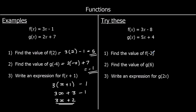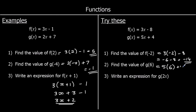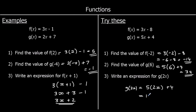For the first one, we're changing x in the f function to negative 2. So 3 times negative 2 minus 8, which is negative 6 minus 8, which is negative 14. For the second one, we're changing x to 6 in the g function. So 5 times 6 plus 4, which is 34. And write an expression for g(2x): we're changing x into 2x in the g function. So that is 5 times 2x plus 4, which is 10x plus 4.